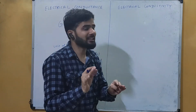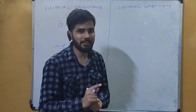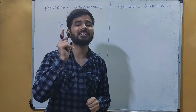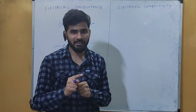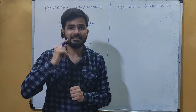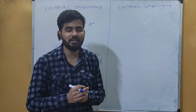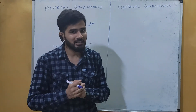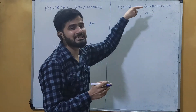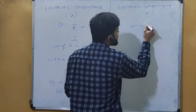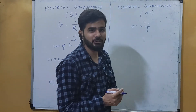Now, just as resistance has conductance as its reciprocal, resistivity has conductivity as its reciprocal. This conductivity is exactly opposite to resistivity in property. Conductivity is the ability of a conductor to allow the flow of current. It is represented by sigma (σ), and σ = 1/ρ, where ρ is the resistivity.